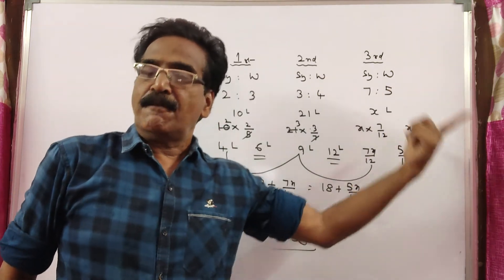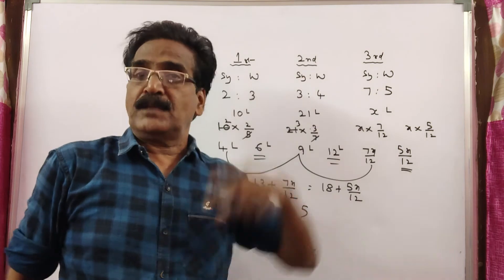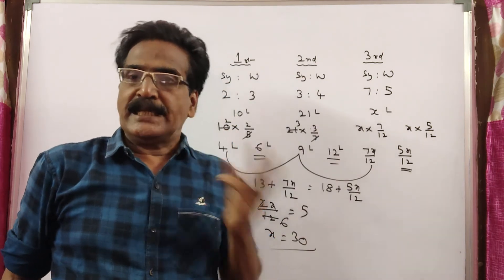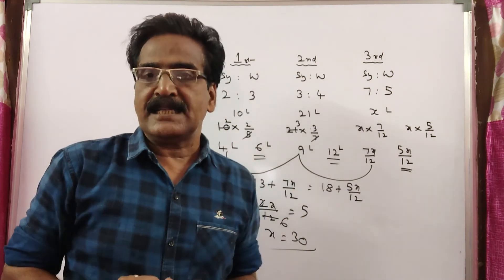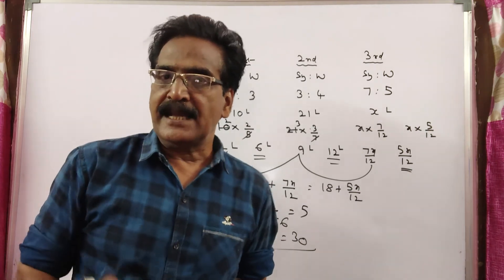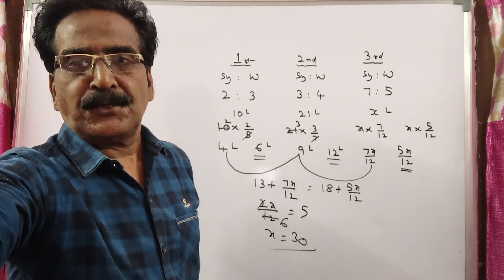30 liters of mixture must be drawn from the third bottle so that in the final mixture, the syrup and water will be in the ratio 1 to 1. Okay friends, thank you.